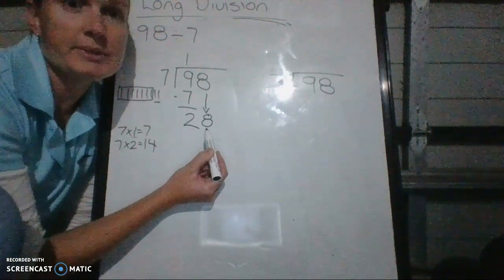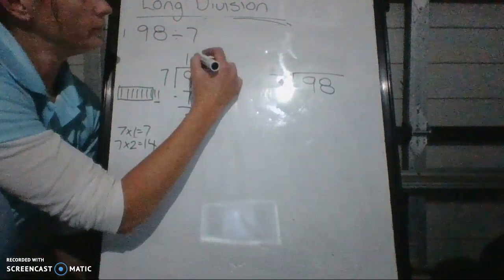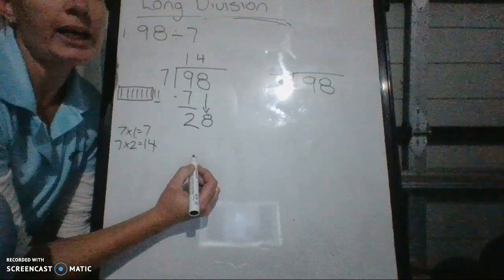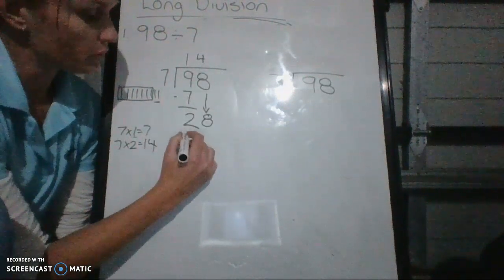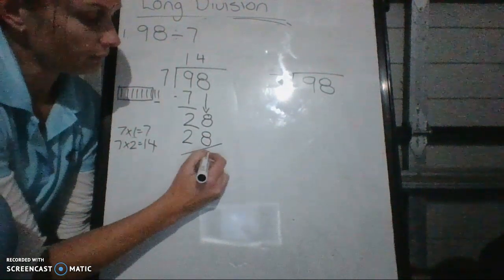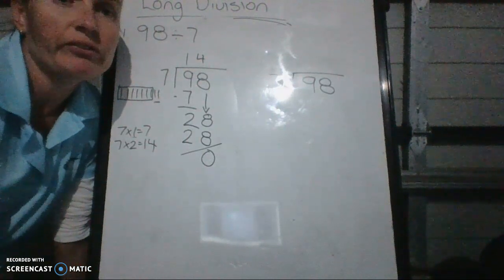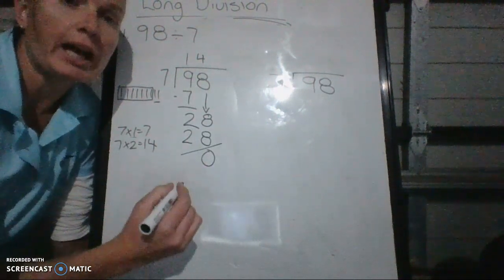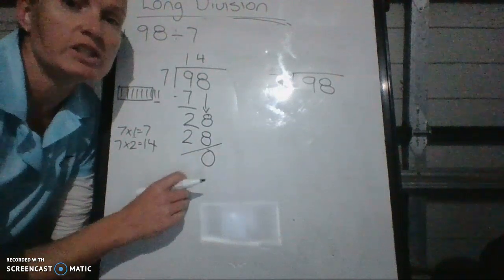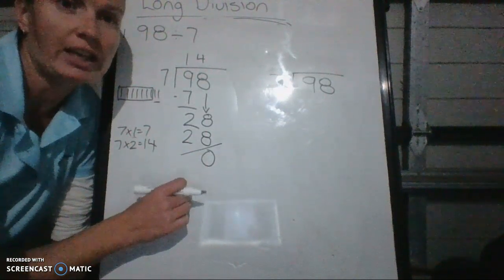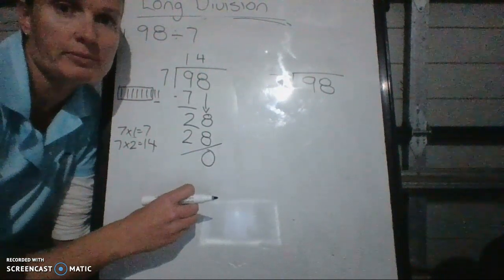I know my 7 times table, so it's 4. And then 7 times 4 is 28. And then you're left with 0. Multiplication. If you don't know your multiplication, division is going to be more challenging for you. That's why we do a lot with times tables.